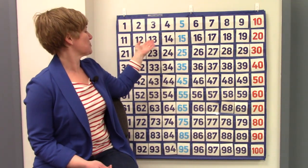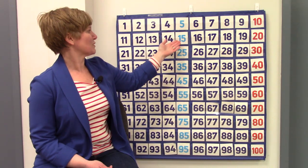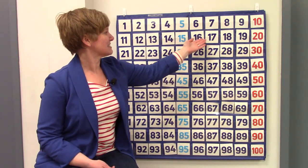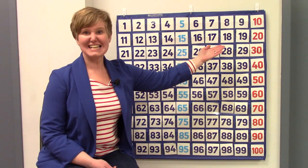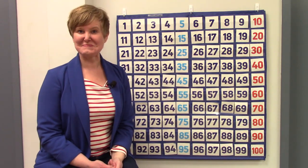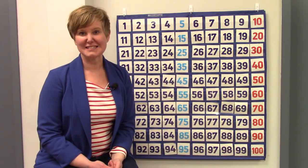Eleven, twelve, thirteen, fourteen, fifteen, sixteen, seventeen, eighteen, nineteen, twenty. We were counting by ones.